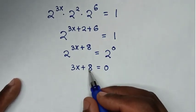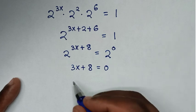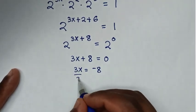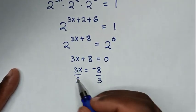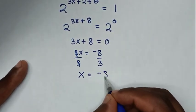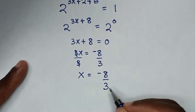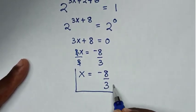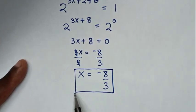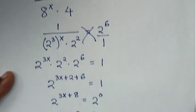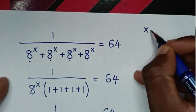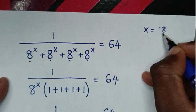We move 8 to the right side, giving 3x equals negative 8. Dividing both sides by 3, we get x equals negative 8 over 3. Therefore, this is the final answer for the value of x in this problem.